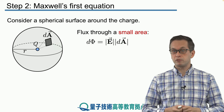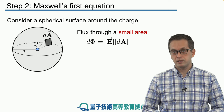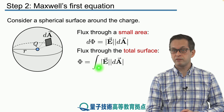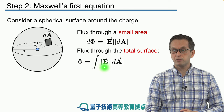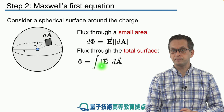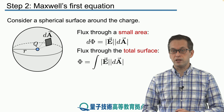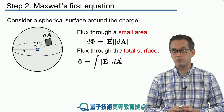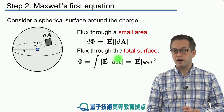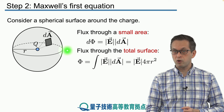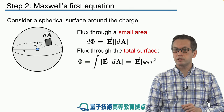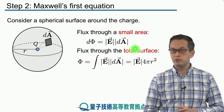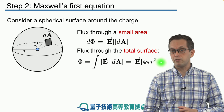To find how much flux goes through the whole surface, we add all the little area elements together by taking the integral over dΦ. The total flux is given by the integral of the magnitude of the electric field at distance R from the charge, times the area element dA. Since it's a sphere, the surface area is simply 4πR². So the total flux through the sphere is just the magnitude of the electric field times 4πR².